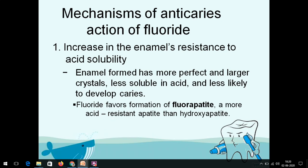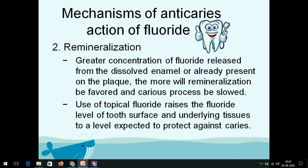When there is an acid challenge, the enamel becomes resistant because it forms fluoroapatite. We know enamel is a hydroxyapatite crystal, so the hydroxyl (OH) ions are replaced — since they are less electronegative than fluoride — and fluoroapatite crystals are formed. This is why the enamel becomes more resistant and less acid-soluble.